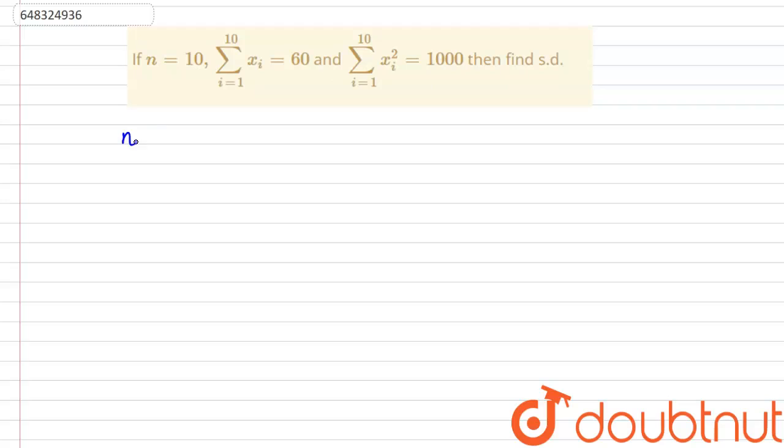So what we have is n is equal to 10, the sum of xi from i going from 1 to 10, we have 10 data points, is equal to 60 and then we have the sum of xi going from 1 to 10 squared, xi squared, is equal to 1000. We need to find the standard deviation.